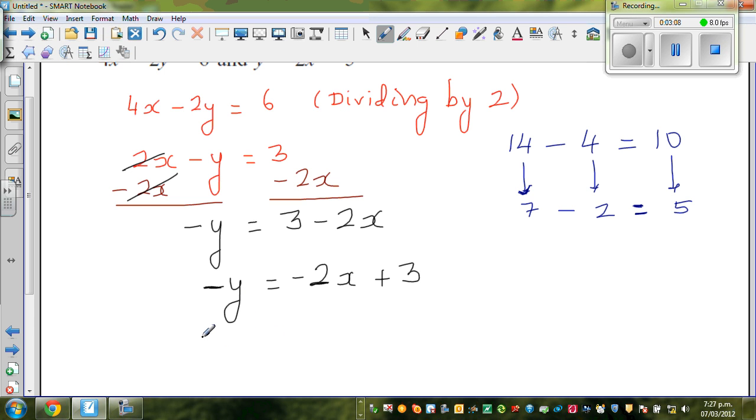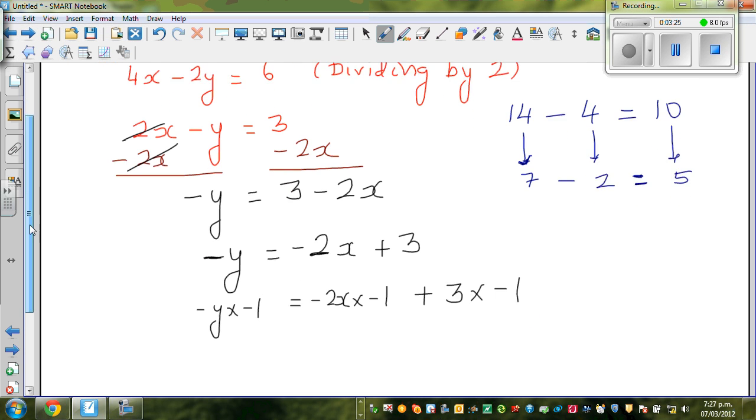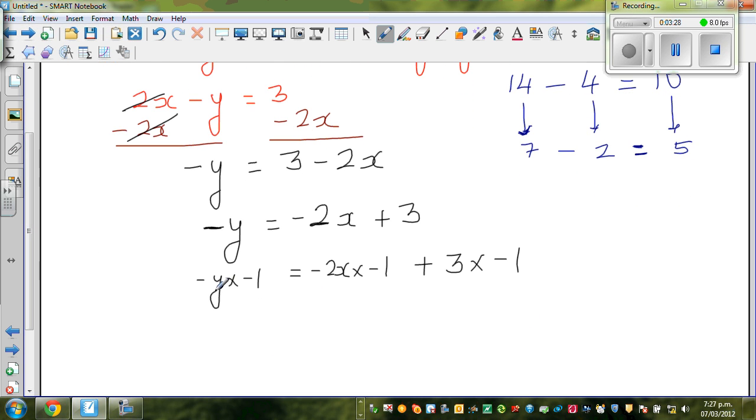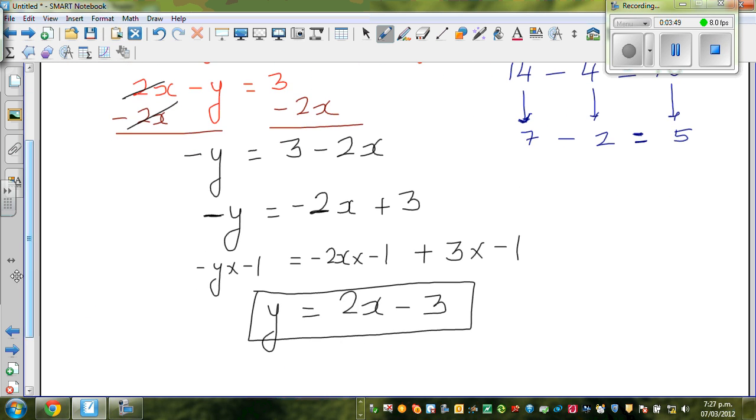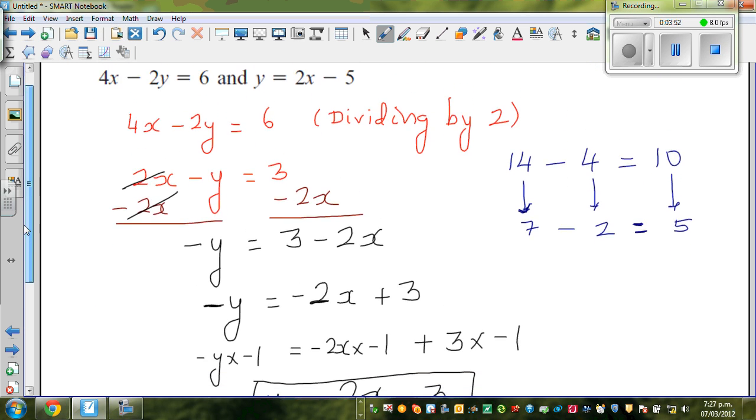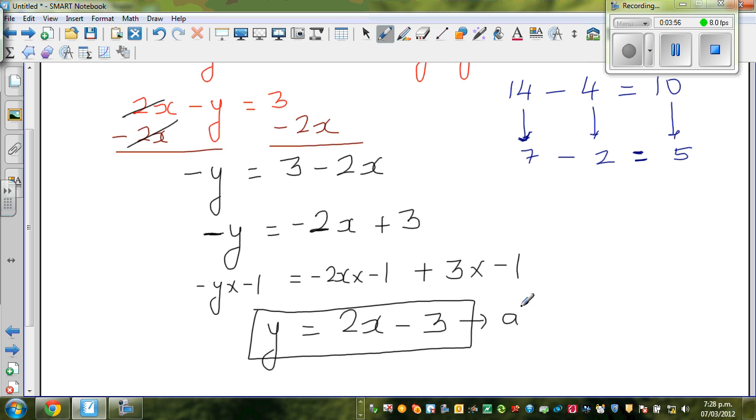So negative y times negative 1 is equal to, you're multiplying this by negative 1. So minus 2x times negative 1 plus 3 times negative 1. So whatever you do to all the terms of both sides is acceptable. So negative y times negative 1 is y. This becomes negative 2x times negative 1 is 2x, and 3 times negative 1 is negative 3. So this is one equation. So this whole process was to change this in the y form. I hope you can see what I'm aiming at. So this I call as equation A.